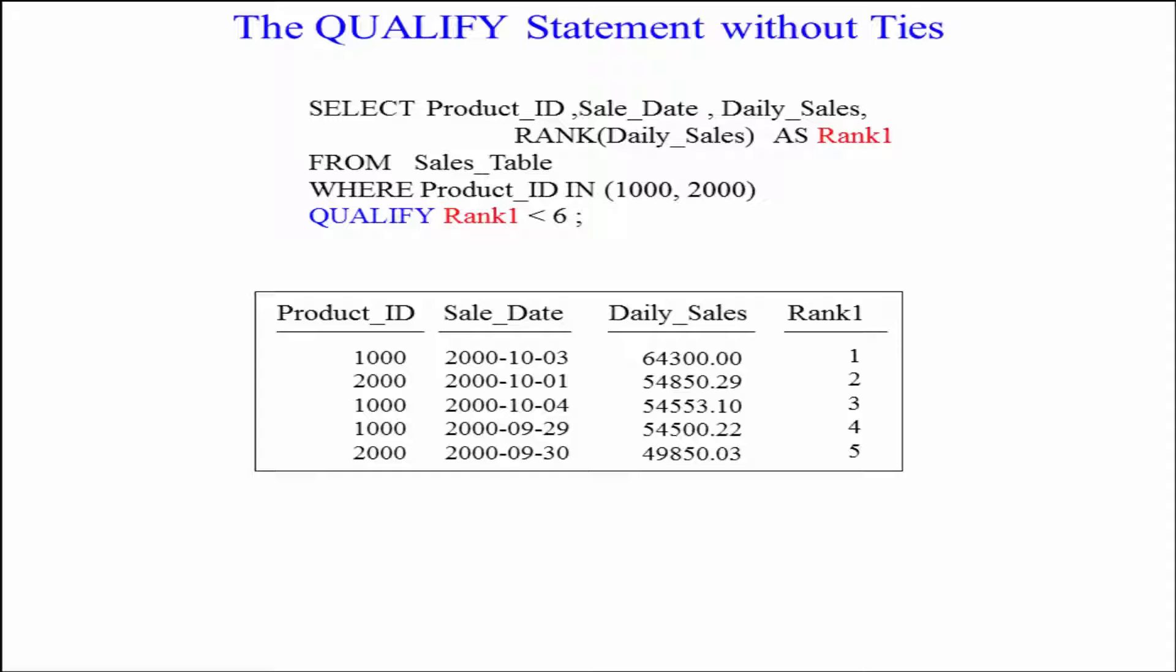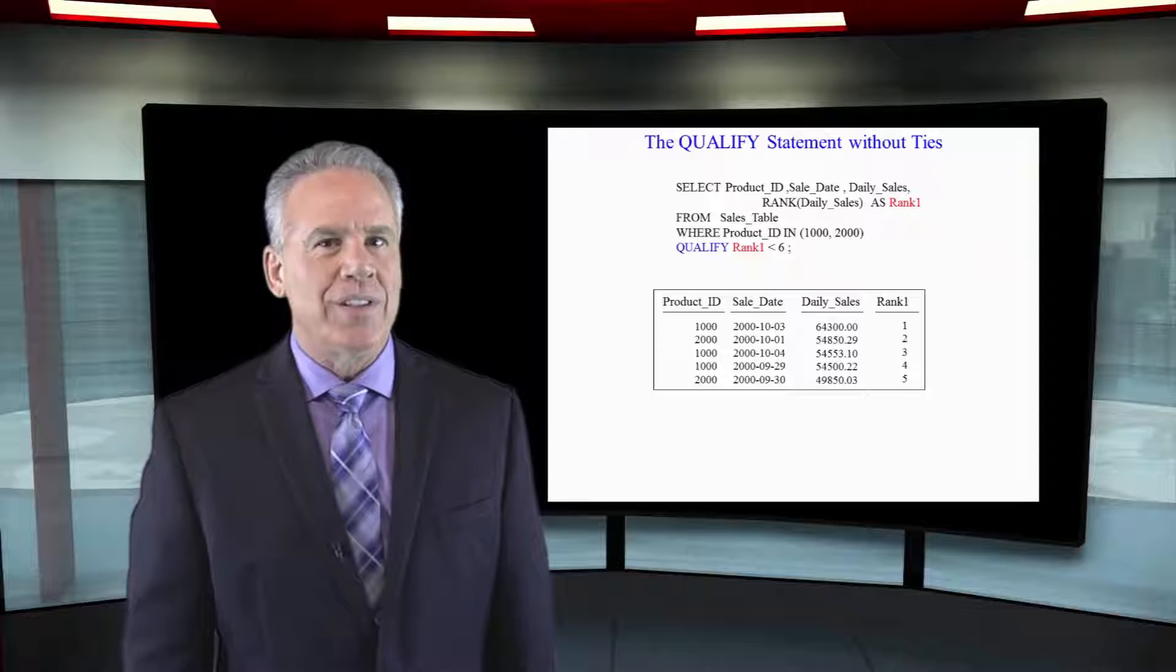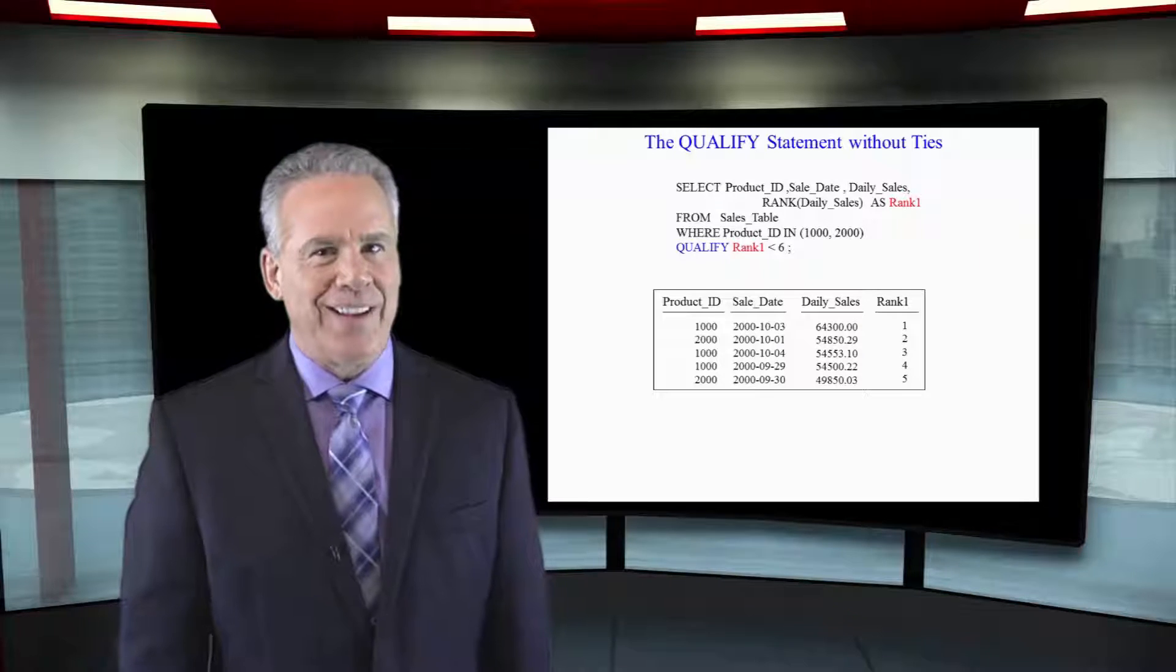So one, two, three, four, five makes sense. Watch what happens when we do this in ascending mode next. We might get some ties.